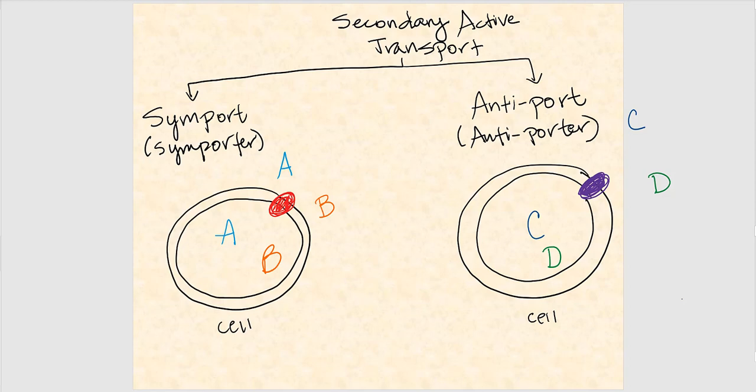This is divided into two parts: symport and antiport. They involve transmembrane proteins. The transmembrane protein for symport is referred to as a symporter, and for antiport it's referred to as an antiporter. Symport is one type of secondary active transport.